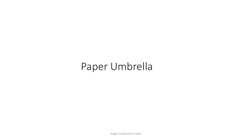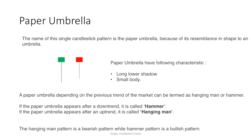Welcome to Chart Traders. Today we are going to see the paper umbrella candlestick chart pattern. It is a single candlestick pattern called the paper umbrella because it resembles the shape of an umbrella, as shown in the figure.